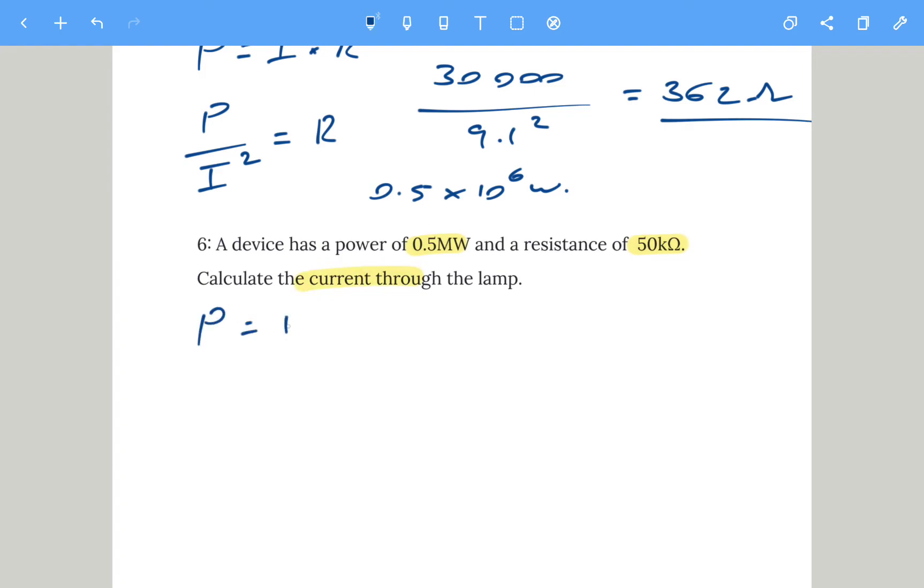We need P equals I squared R. What we need to do first is get rid of the times R, so the opposite of timesing by R is simply dividing by R on the other side, and that will give us current squared. The current squared we need to do the opposite of squaring, and the opposite of squaring is square rooting. So the current would be the square root of the power divided by the resistance. Then it's just a matter of putting the numbers in. I'm going to do square root of the power, which is 0.5 MW, so I'm going to write 0.5 times 10 to the power of 6.